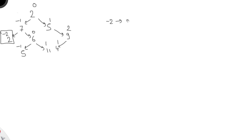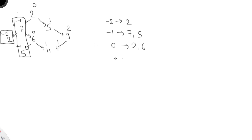We need to print nodes at the same vertical level in a single line. For minus 2, there is only one node: 2. For minus 1, we have two nodes: 7 and 5. For 0, we have two nodes: 2 and 6. For level 1, we have three nodes: 11, 5, and 4. For level 2, we have one node: 9.